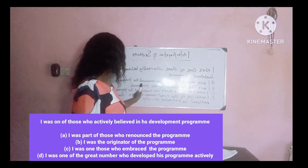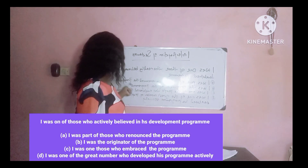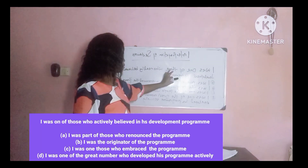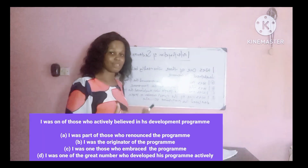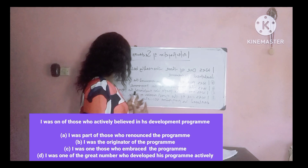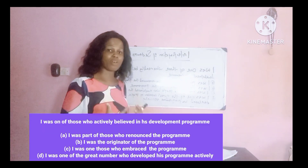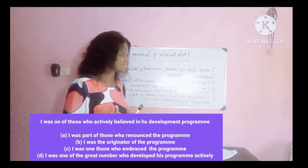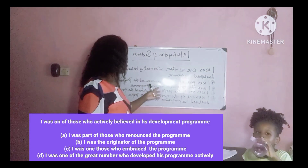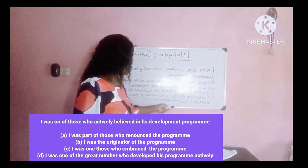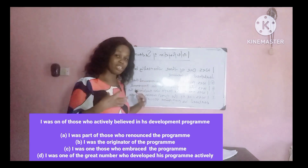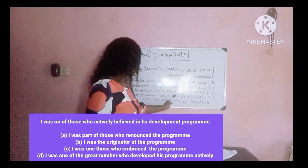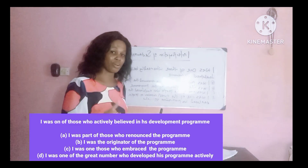Option A: 'I was part of those who renounced the program' — it's not the correct answer. Both are talking about the program, but this option is talking about renouncing. Option B: 'I was the originator of the program' — I only believed in the program. The statement is talking about accepting, believing. Option C: 'I was one of the people who embraced the program' — this is the correct answer.